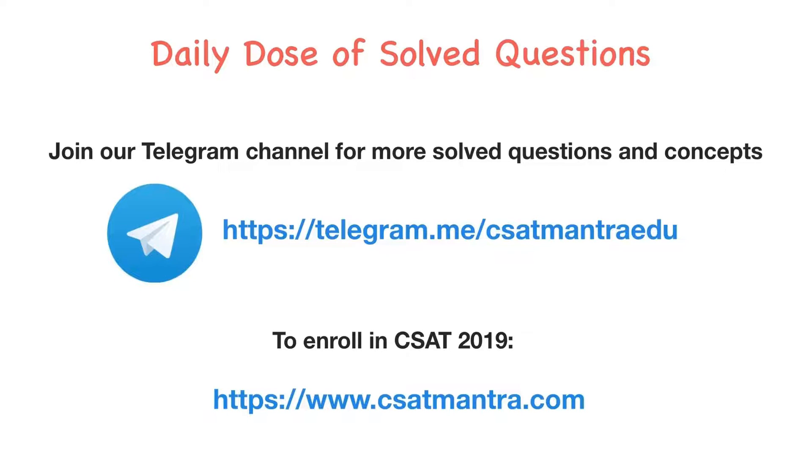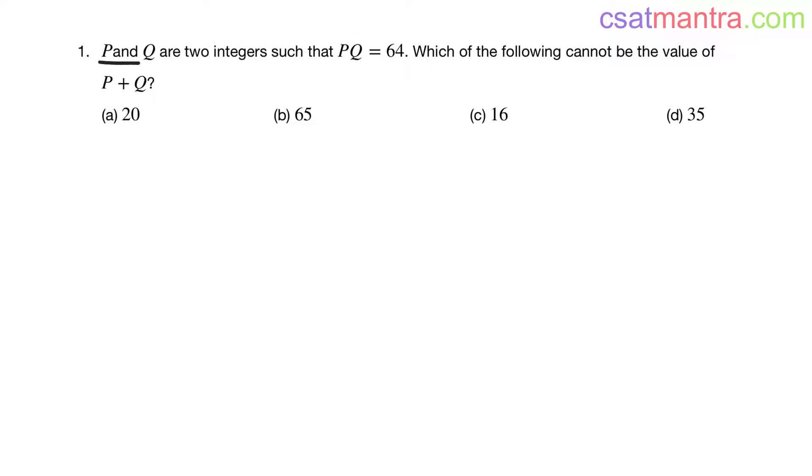P and Q are two integers such that P into Q is equal to 64. Which of the following cannot be the value of P plus Q? Options are given.